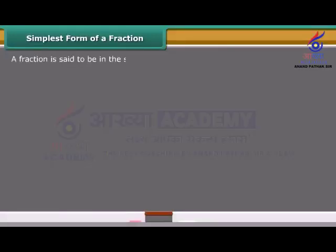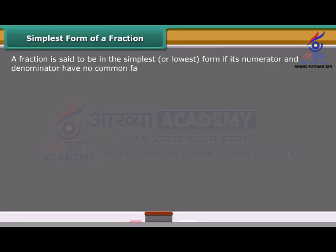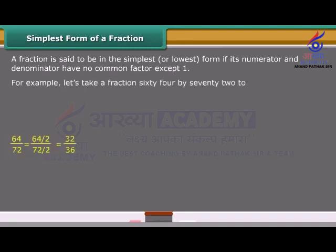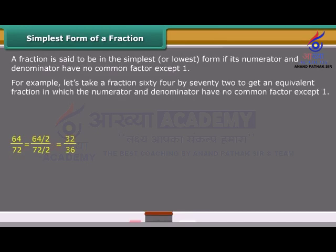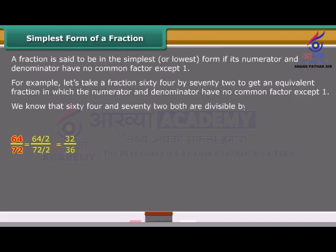A fraction is said to be in the simplest or lowest form if its numerator and denominator have no common factor except one. For example, let us take a fraction 64 by 72 to get an equivalent fraction in which the numerator and denominator have no common factor except one. We know that 64 and 72 both are divisible by two. We get a new fraction 32 upon 36.